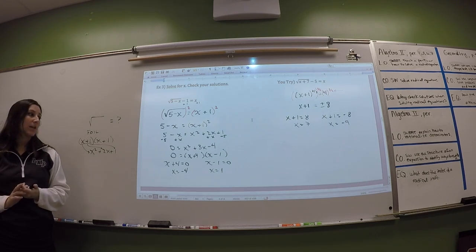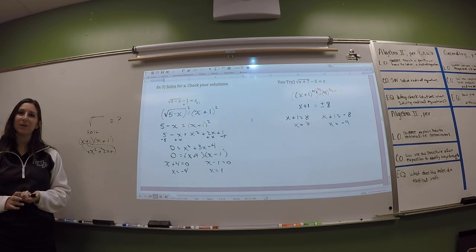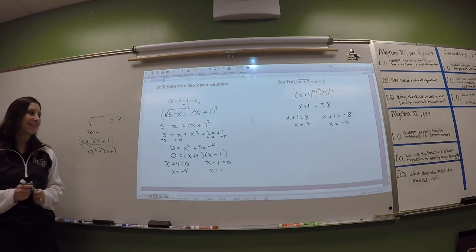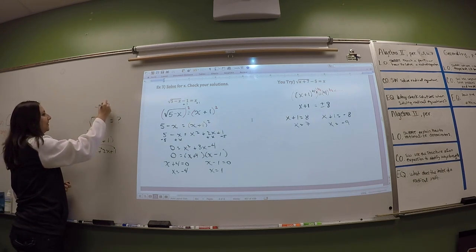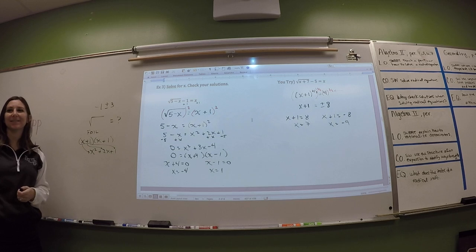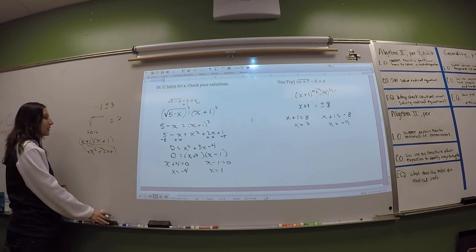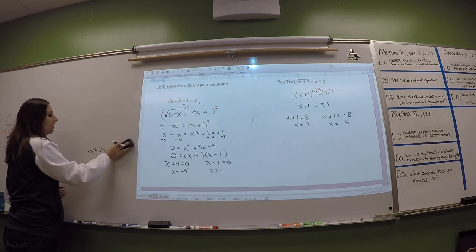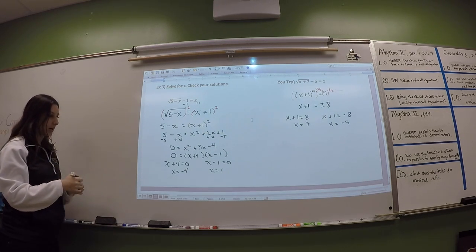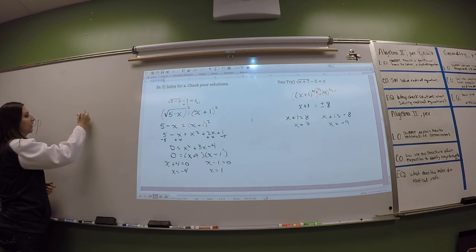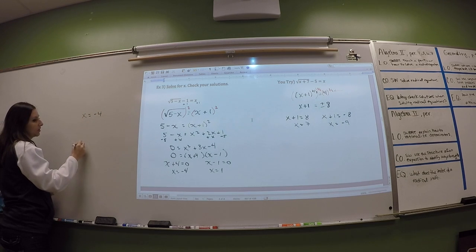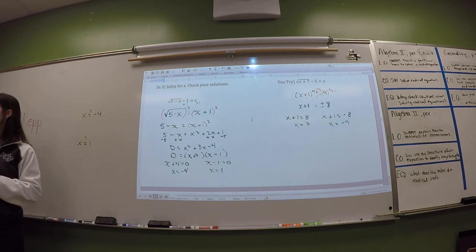Now, if you choose to use the quadratic formula anyway, just make sure that if you get something like this, you don't leave it like that. You keep going. You simplify all the way until you get numbers. All right. Now, we're going to check our answers for this too. So, we're going to check negative 4, and we're going to check 1. Question mark. Question mark. So, go back to your calculator.